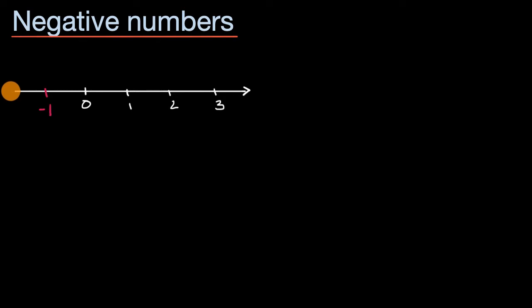If I were to go another one to the left, I would get to negative two. And I could keep going. As many positive numbers there are, I can have the negative version of it. However far I am to the right, I could be that far to the left.